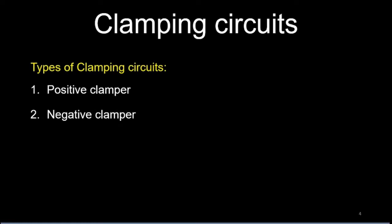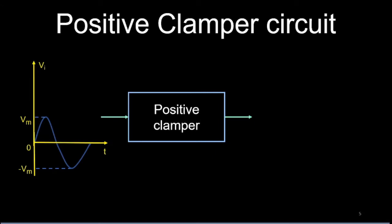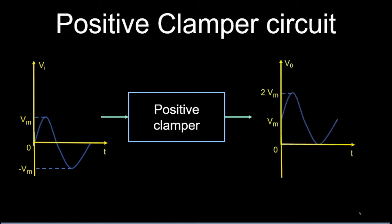There are two types of clamping circuits: one is positive clamper and there is negative clamper. Let us consider a positive clamper as a black box, where we consider a sinusoidal input signal whose peak value is Vm and negative peak value is minus Vm, so that the peak to peak value is 2Vm. When this input signal is passed through a positive clamper, the output is given as the input voltage plus Vm.